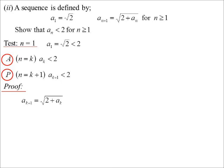So our proof, term k plus 1, but we've got a formula that allows us to link in our assumption. So it's equal to square root of 2 plus ak, so therefore it must be less than the square root of 2 plus 2. Because term k is less than 2. Well, 2 plus 2, that's equal to 4, and the square root of 4 is 2. So the term k plus 1 is less than 2. So what looks like something that could be difficult actually is fairly quite simple in this case.